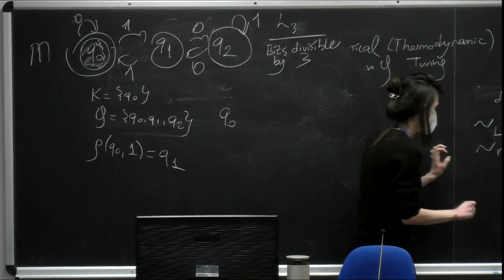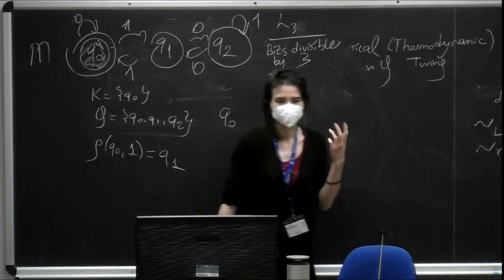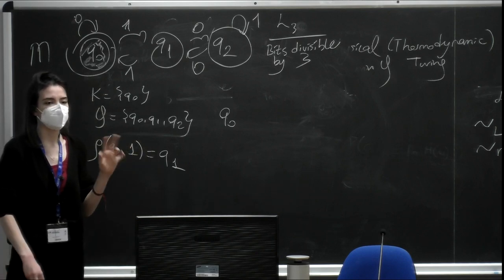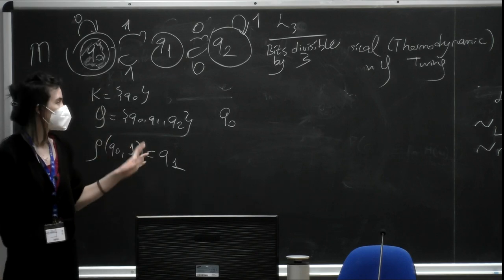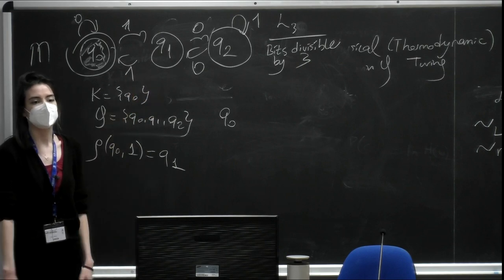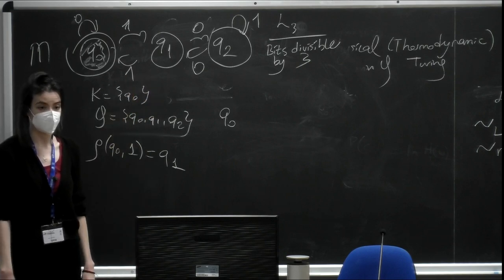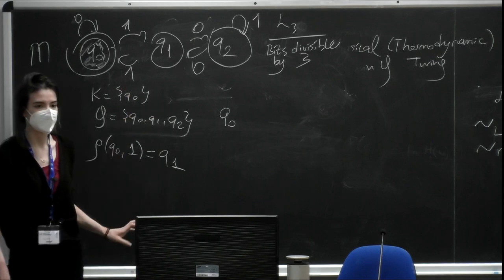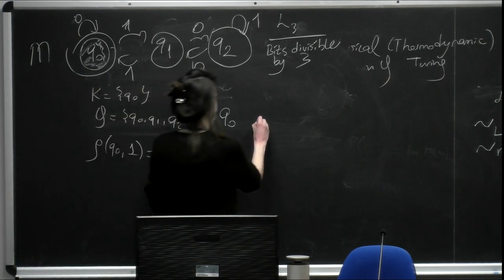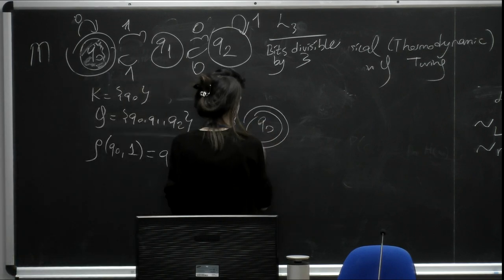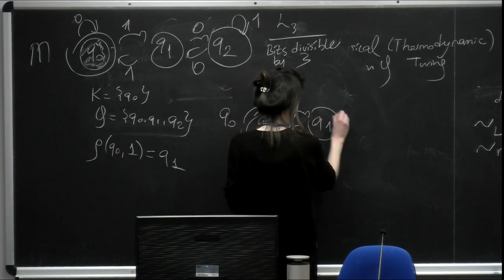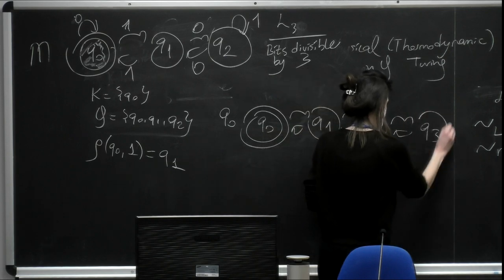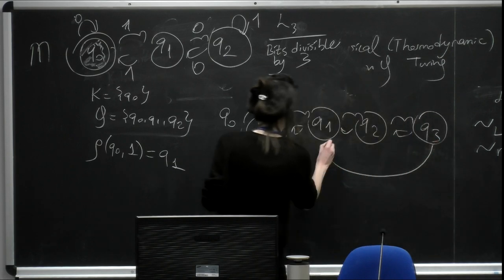Let's say this automaton recognizes the following language L — let's say L3. This is the DFA that recognizes this language, call it M. We know from the Myhill-Nerode theorem that there is a unique DFA recognizing this language with a minimal number of states. There are an infinite number of finite automata that can recognize this language, so let me draw one of them — call it M prime.